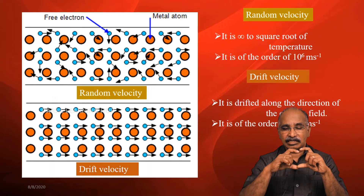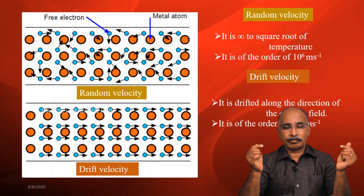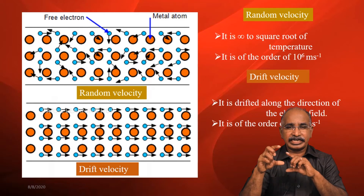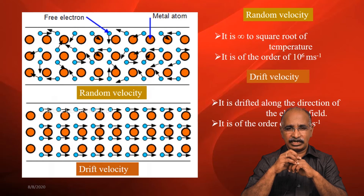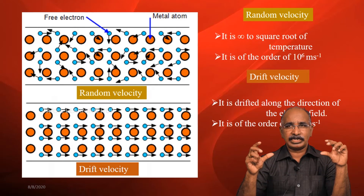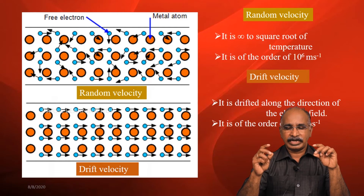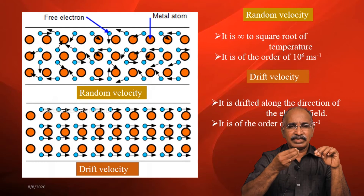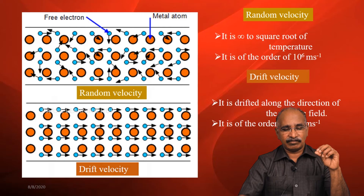On the other hand, in a metal, when an electric field is applied, these electrons become oriented along the direction of the electric field. This results in a small additional velocity of the order of 10 to the power of minus 6 meters per second. This increase in velocity is called the drift velocity of the electrons.